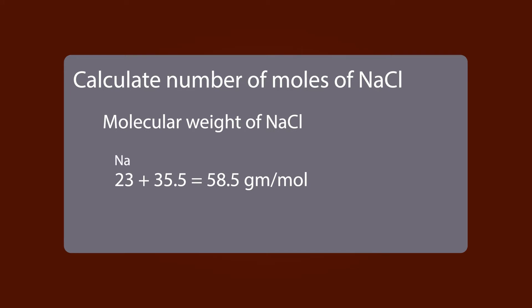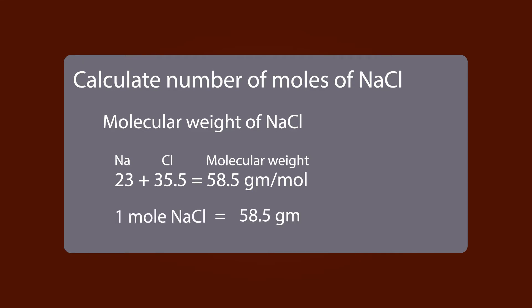...23 plus 35.5. Here, 23 indicates sodium and 35.5 indicates chlorine. So we get the molecular weight of NaCl as 58.5. Therefore, one mole of NaCl is equal to 58.5 grams.